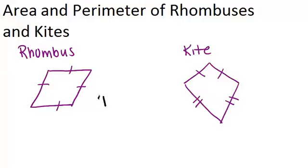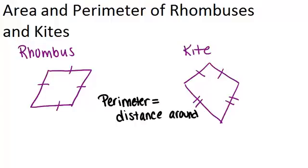Now, the perimeter of any shape is the distance around the shape. So, whether it's a rhombus, a kite, or some other shape, to find the perimeter, all you have to do is find the length of all the sides and add them up.